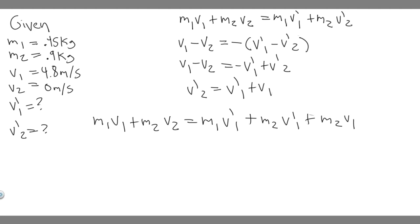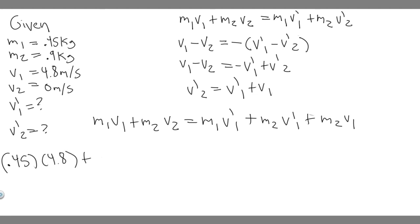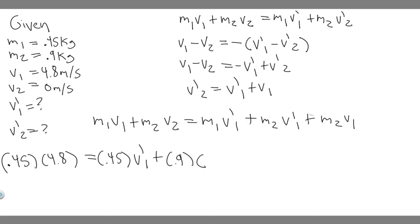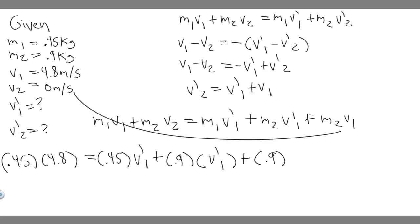Now we substitute the known values. We know all variables except v'₁, which is what we're solving for. So: 0.45 × 4.8 + 0.9 × 0 = 0.45 × v'₁ + 0.9 × v'₁ + 0.9 × 4.8. Since 0.9 × 0 = 0, we drop that term. The left side gives 2.16 = 0.45v'₁ + 0.9v'₁ + 0.9 × 4.8.